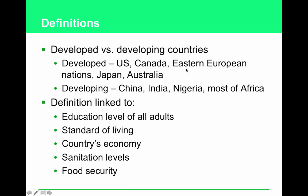Some definitions you need to know: the difference between a developed versus a developing country. Developed countries are places like the U.S., Canada, Eastern European nations, Japan, and Australia. Developing countries include China, India, Nigeria, and most of Africa. This definition is linked to the educational level of all adults — males and females — the standard of living (indoor plumbing, ease of accessing water), the country's economy, sanitation levels (where does waste go?), and food security — can you count on eating every single day? The majority of China is still rural areas where these things are at developing country levels.